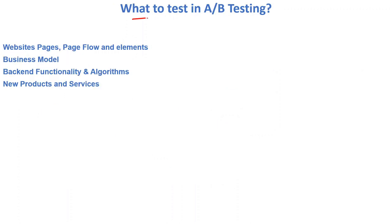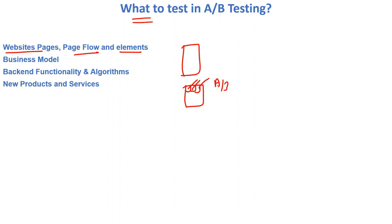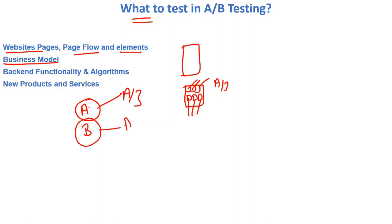What can we test in A/B testing? We can test website pages, page flow, and individual elements within pages. For example, we can test the page flow — how different pages work for different sets of users — and also test which specific elements within a web page perform better. We can also test business models: business model A vs. business model B, and choose the better one using A/B testing.